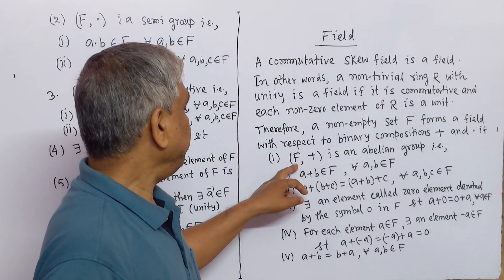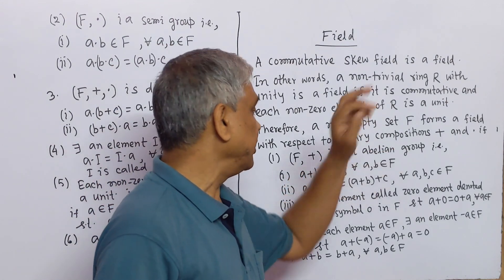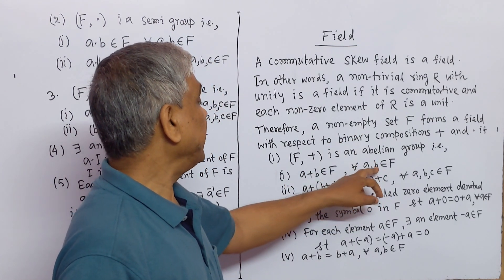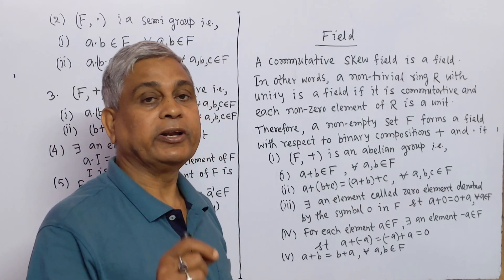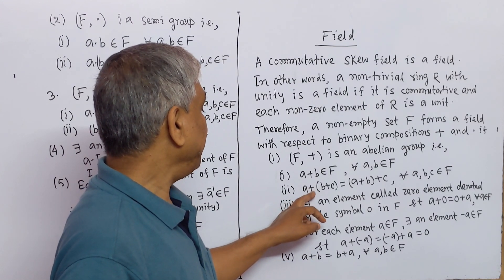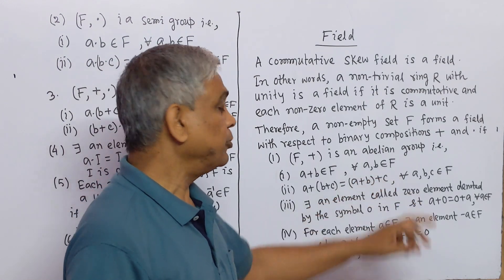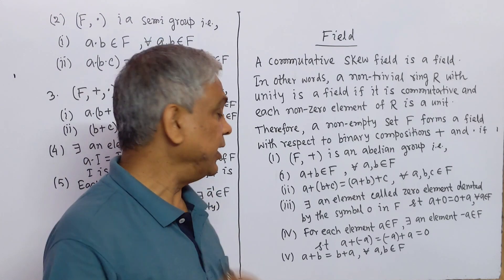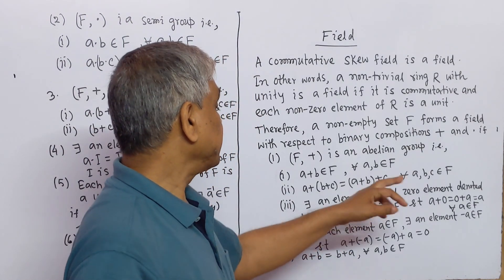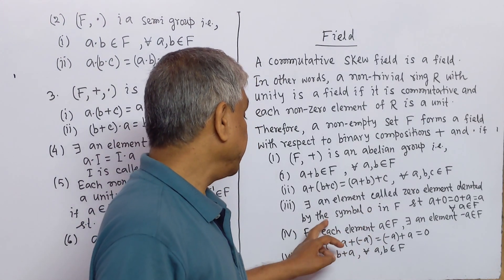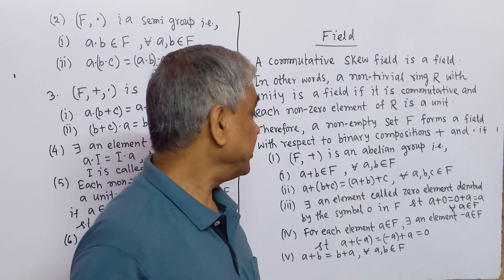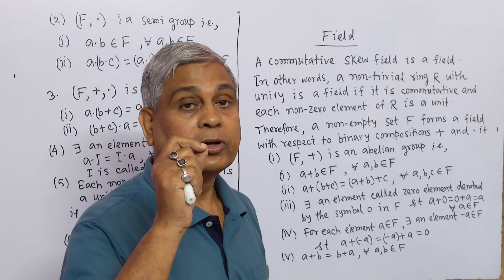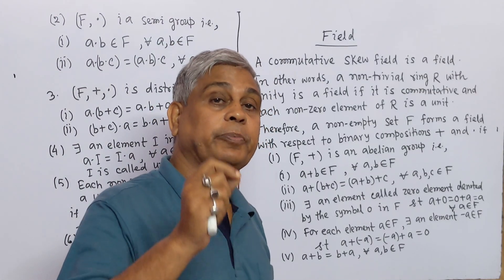Number 1: F with binary composition addition is an abelian group. That is: (1) a + b belongs to F for all a, b in F — closure property for addition. (2) a + (b + c) = (a + b) + c for all a, b, c in F — associative property for addition. (3) There exists an element 0 in F such that a + 0 = 0 + a = a for all a in F — existence of additive identity.